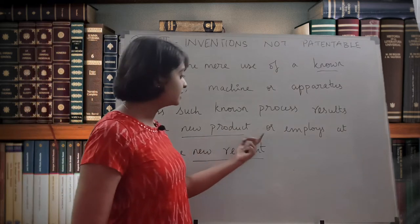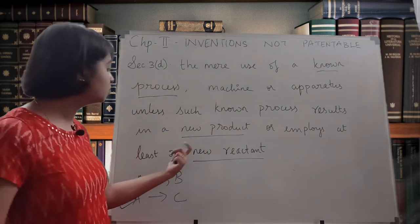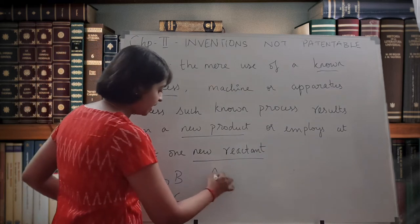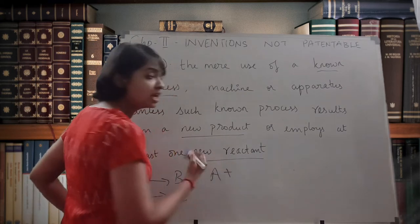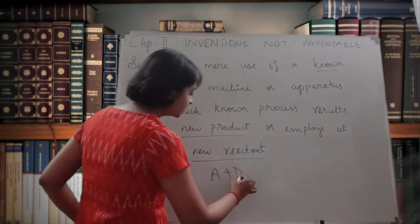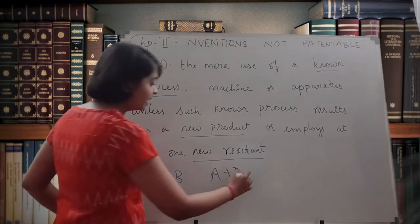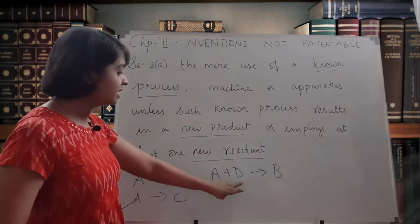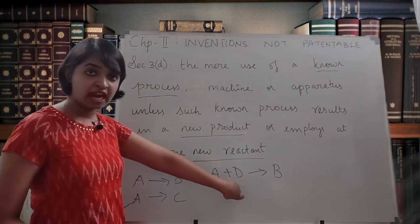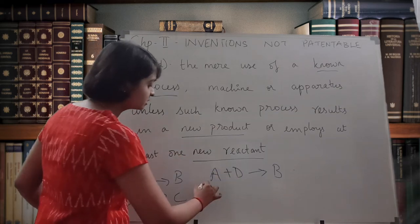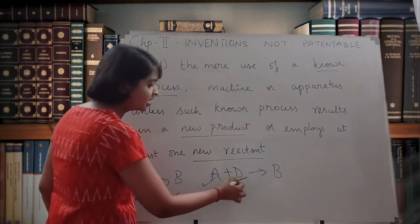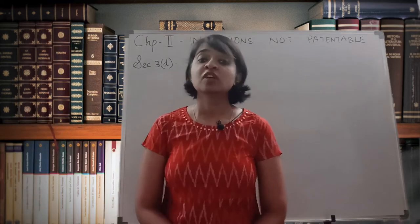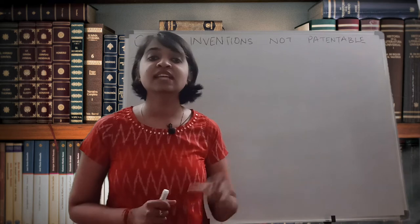The other way to get patent protection for a known process is if it employs at least one new reactant. For example, if process A now employs a new reactant D, and by adding D they get product B of much better quality, then since it is employing a new reactant, they can again ask for patent protection. Merely by adding a new reactant to it, they get protection; otherwise they won't.